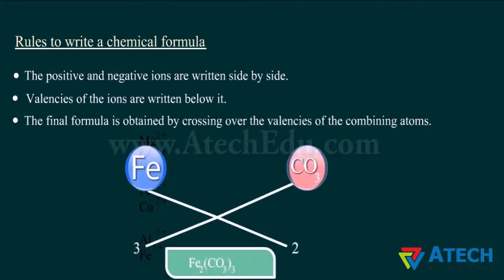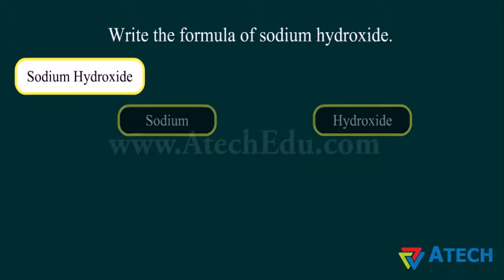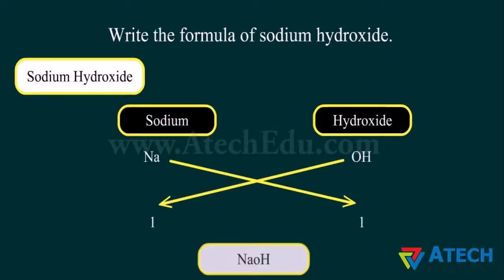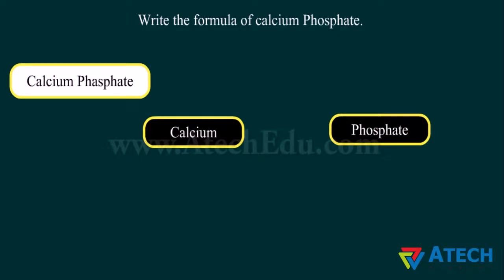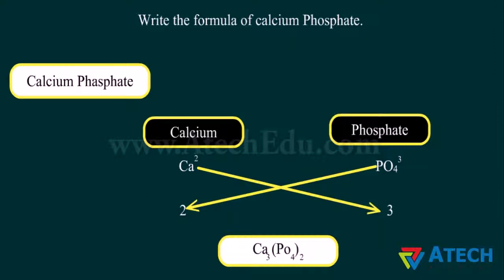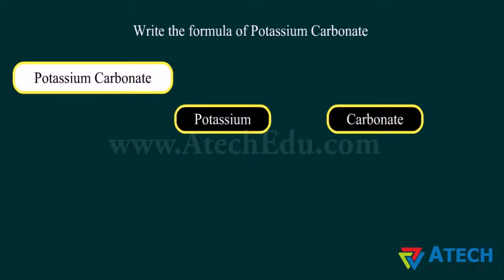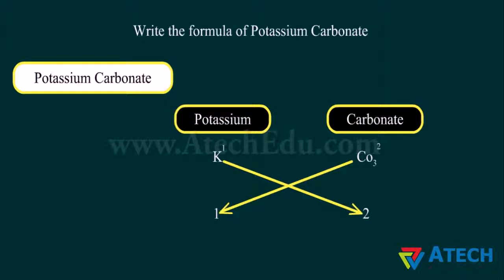Here are examples of writing chemical formulas. Since the valency of each sodium ion and hydroxide ion is 1, the formula is NaOH. The valency of calcium ion is 2 and that of phosphate ion is 3 — upon cross multiplication of valencies, the formula of calcium phosphate is Ca3(PO4)2. The valency of potassium ion is 1 and that of carbonate ion is 2 — upon cross multiplication, the formula of potassium carbonate is K2CO3.